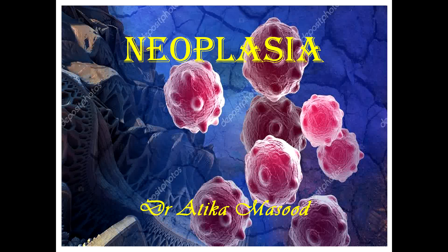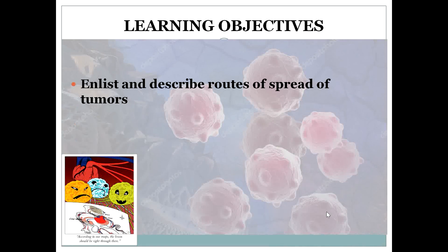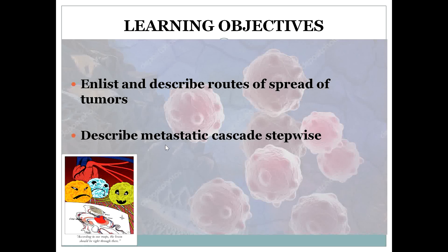Bismillahirrahmanirrahim, dear students, Assalamu Alaikum. I'm Dr. Artika Masood. Today we are going to discuss metastasis in neoplasias. Whenever we are no longer checking cell checkpoints, cancer cells are growing rapidly because of the loss of cell cycle checkpoints, and because there is no check, they are going to proliferate, invade, and metastasize. The learning objective is that students will be able to enlist and describe the routes of spread of the tumor and describe the metastatic cascade stepwise.